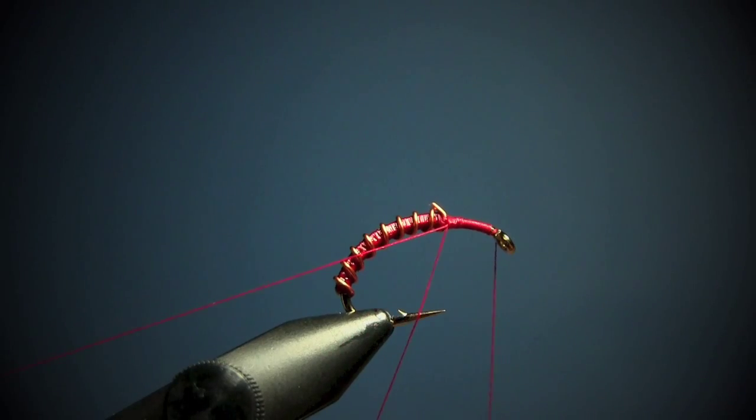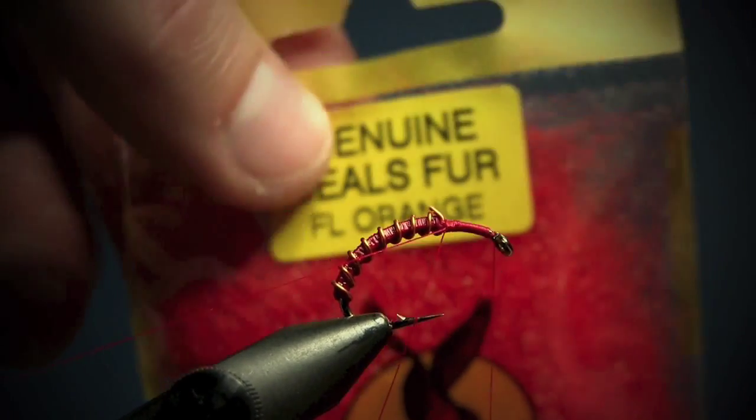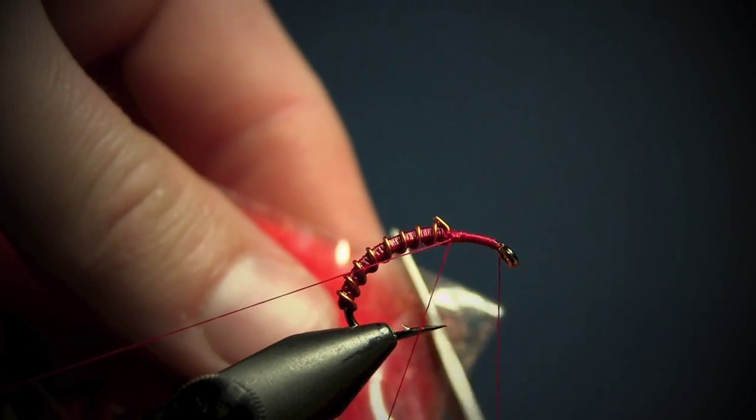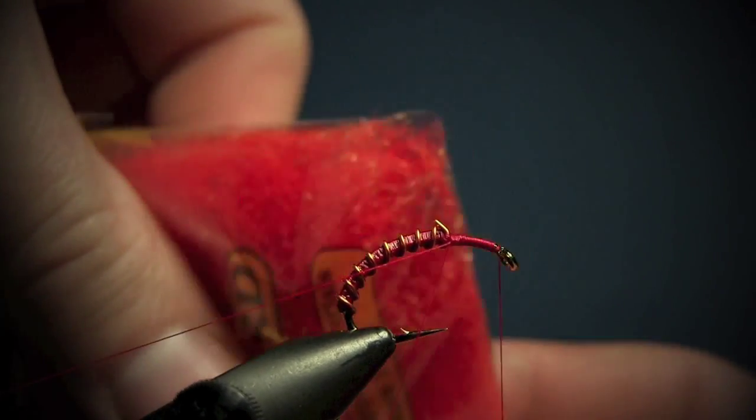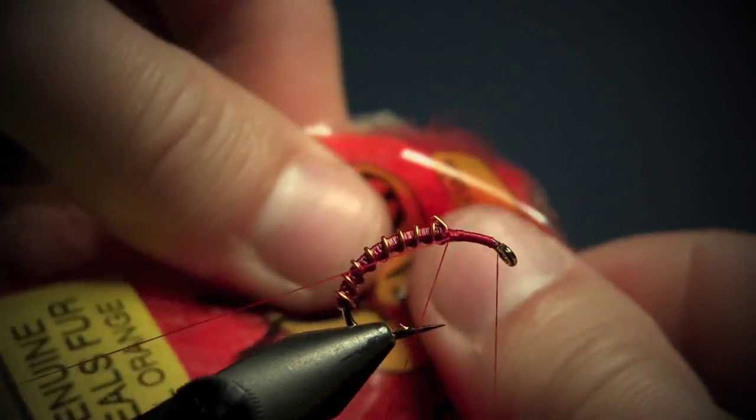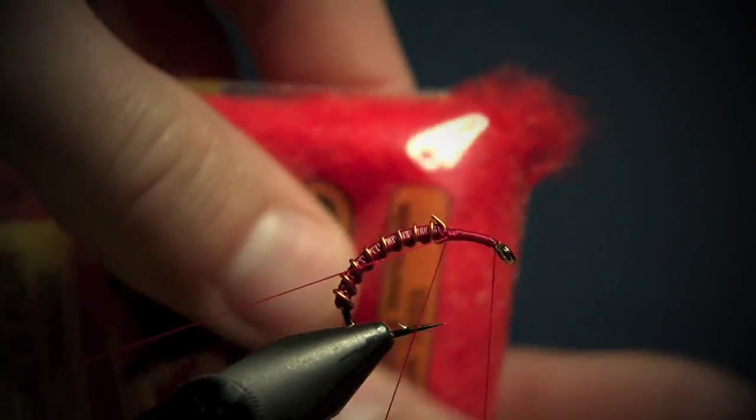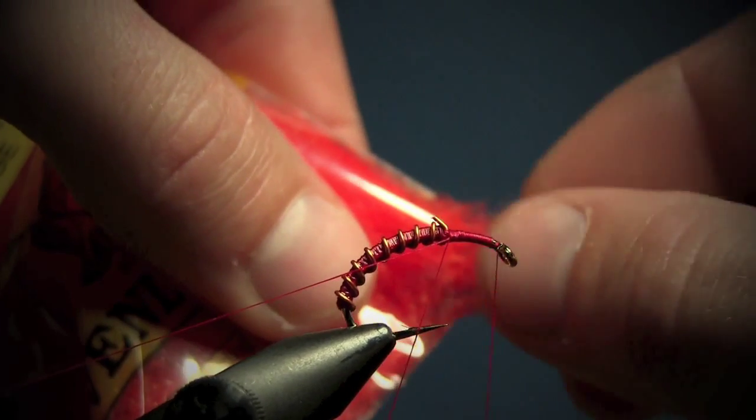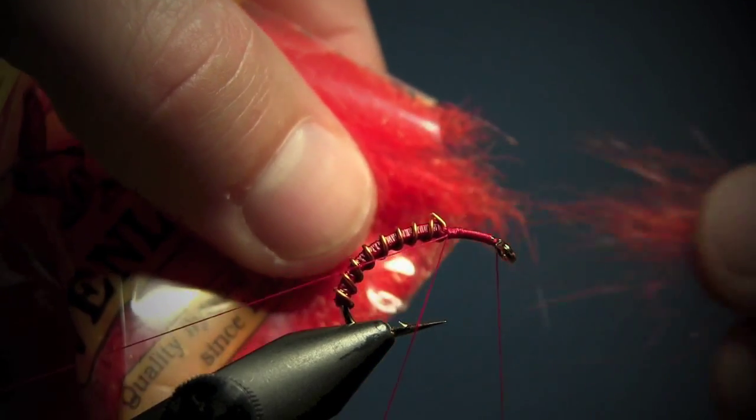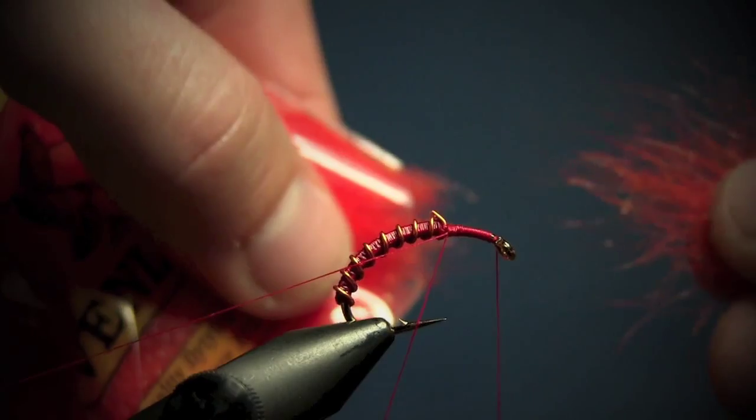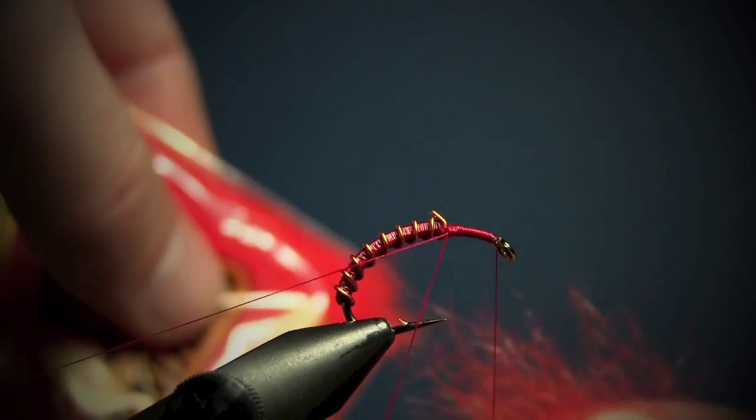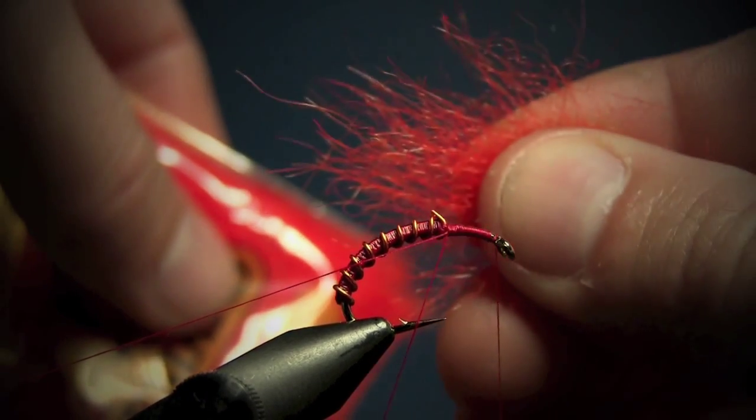Now we're going to take out some seal fur. I use fluorescent orange. I go like this, cut the corner, and just by squeezing, the fibers come out. Holding like that, pulling the fibers like this, about four or five times. Now we got the full length of the fibers.